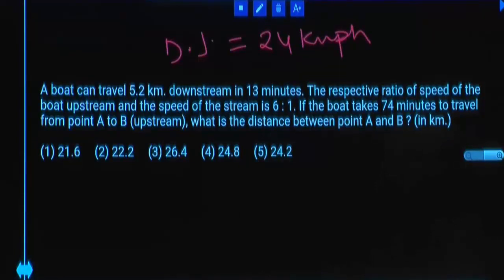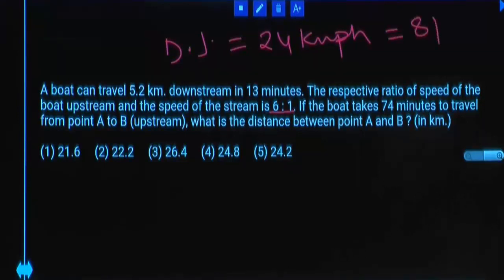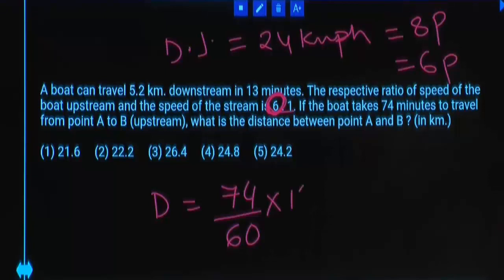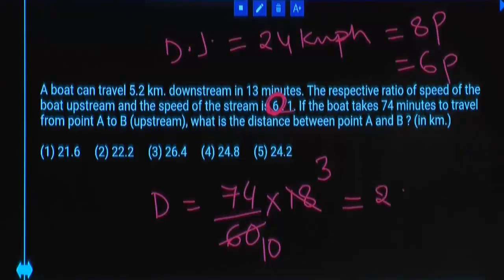The ratio of speed of the boat upstream to speed of the stream is 6 to 1. If upstream is 6 parts and stream speed is 1 part, then downstream is upstream plus 2 times stream speed, so 8 parts. Eight parts equals 24 km per hour. The boat takes 74 minutes to travel from A to B upstream. Upstream speed is 6 parts; if 8 parts equals 24, then 8 is 3 times into 24, so 6 parts is 18 km per hour. Distance equals 18 times 74 divided by 60, which gives 22.2 kilometers.